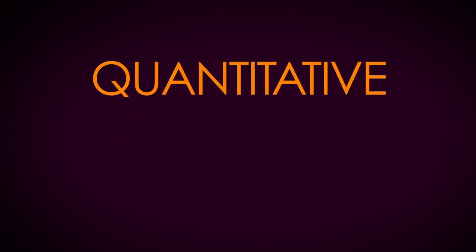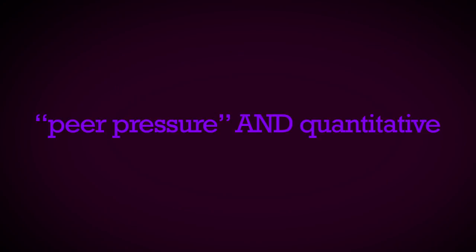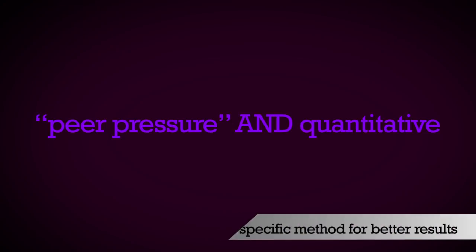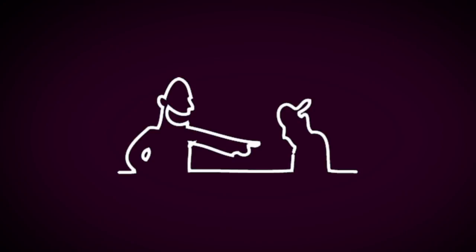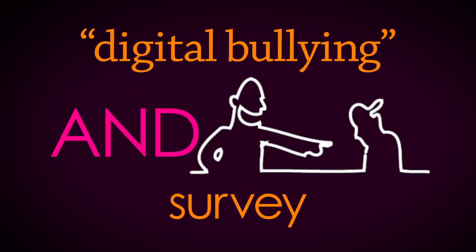One technique is to add the words quantitative or qualitative to your search. For example, you might search peer pressure and quantitative. If you have a specific method in mind, you might also add that to your search. For instance, if you are looking at bullying online, you might search digital bullying and survey.